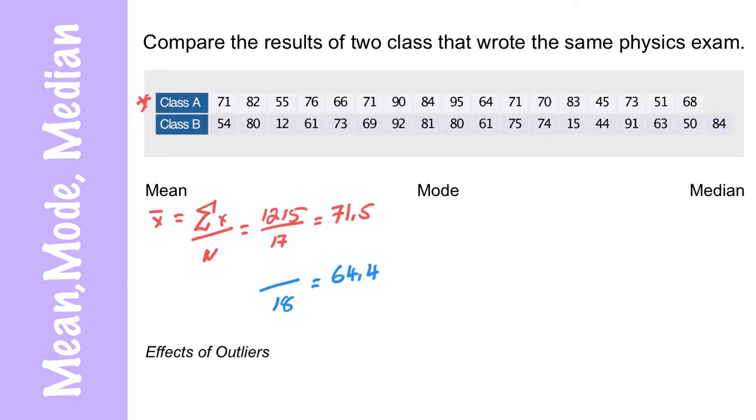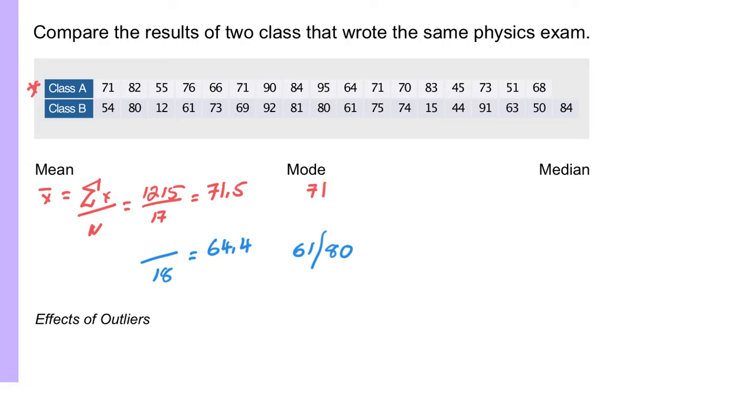The mode of class A is 71. And in class B, there are actually two modes, 61 and 80. The median is the same as the mode, 71. And the median of class B is the two middle numbers, 69 plus 73. Because there's an even number of data, you take the two middles, divide by two, and that's 71.